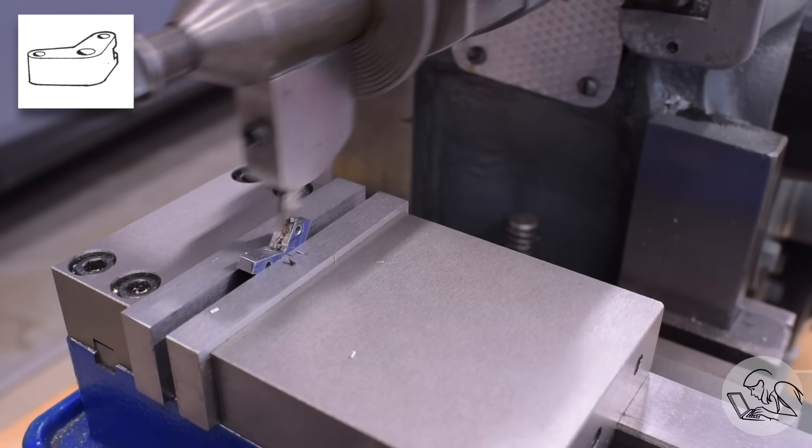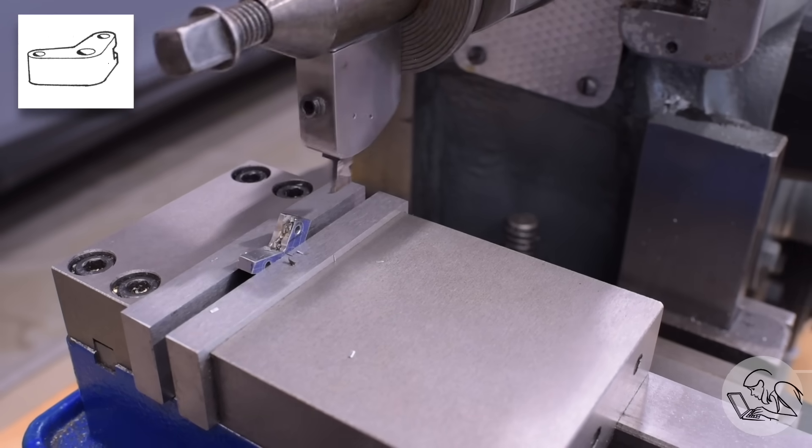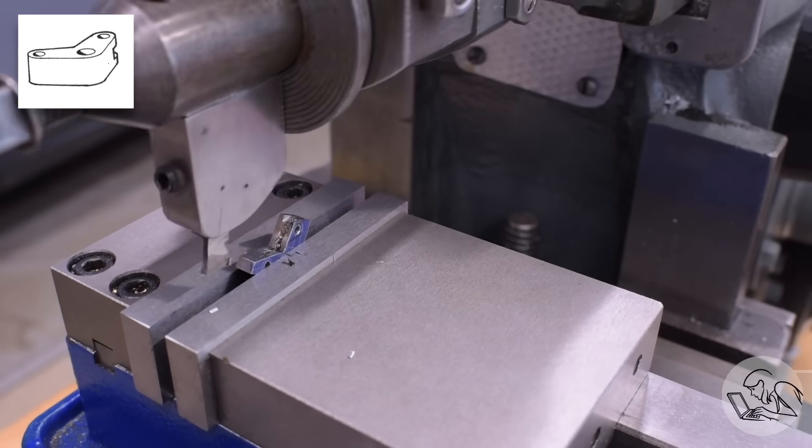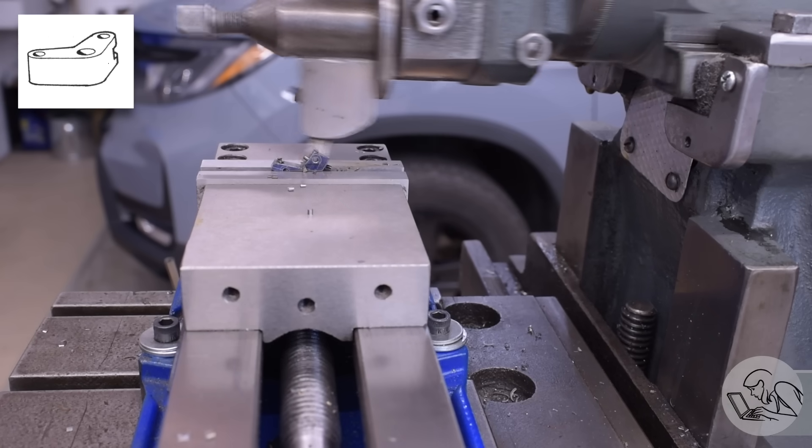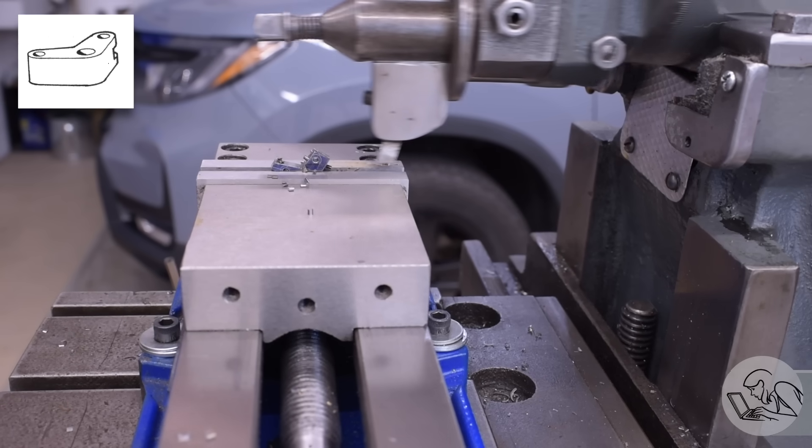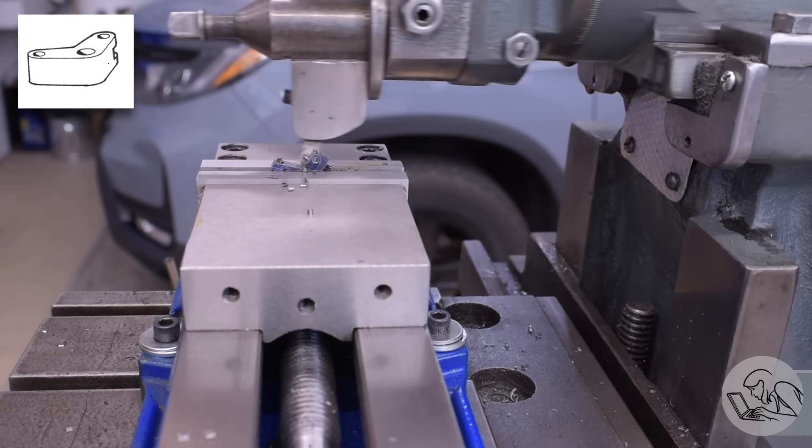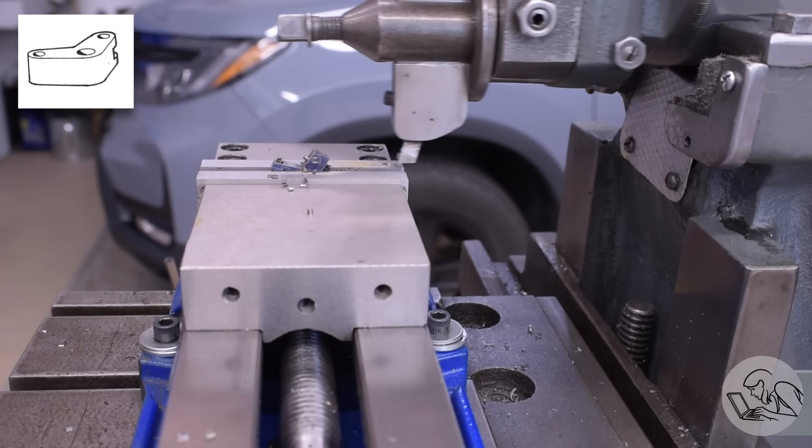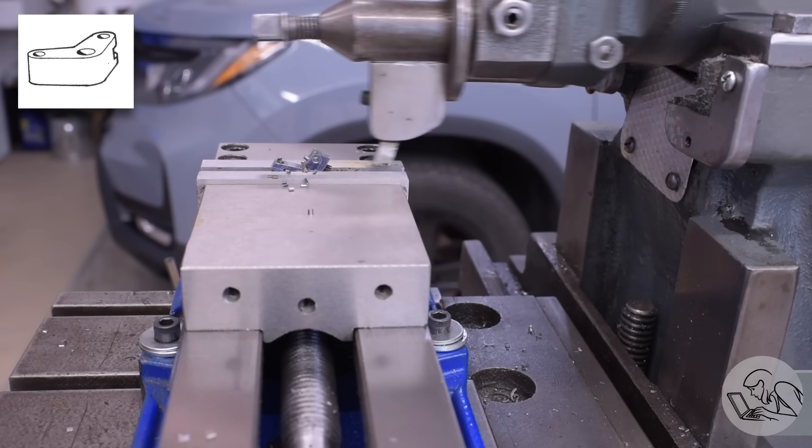There's another neat trick that the shaper can do. As that slot gets down to final depth you can see the tool is going to start hitting the other leg of the part so I was able to simply shorten up the stroke on the shaper and have the tool stop before it touches the other leg. So it can go through one leg, stop short of touching the other leg, and then go back and do another pass. Pretty neat. Hashtag stupid shaper tricks.